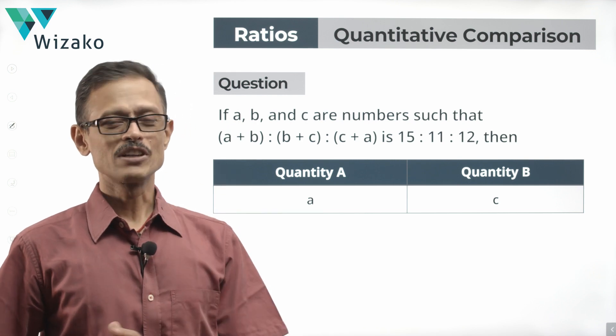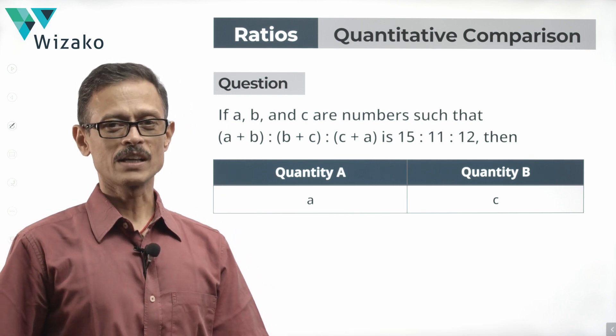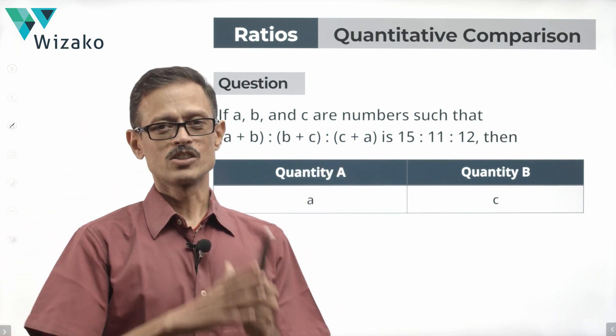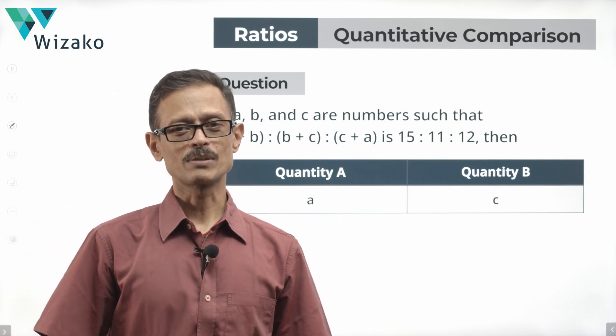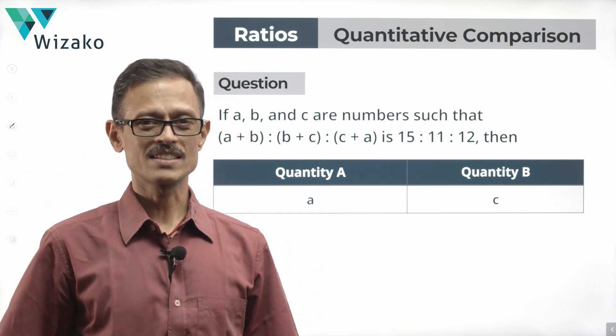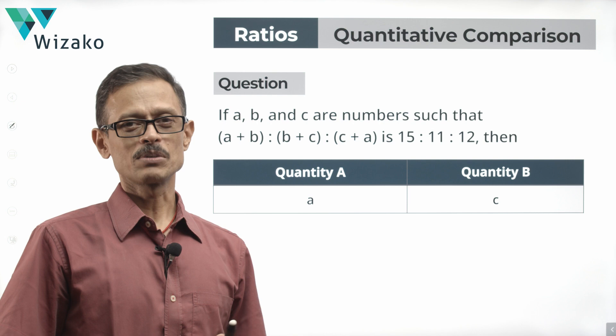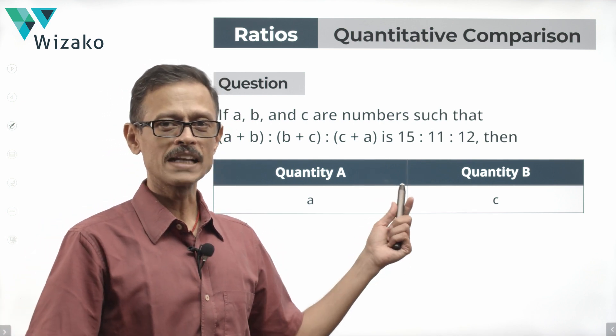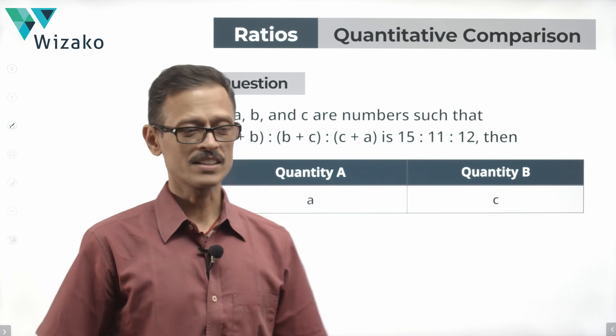Hello everyone. This is a beautiful, interesting GRE quantitative comparison question from the topic ratios. Appears to be a very simple question. Conceptually, yes, a very simple, straightforward question. Sorry, simple question, not necessarily a straightforward question. There's a beautifully laid out trap in this question. Unless you watch out for it, there's a good chance we might end up getting the answer incorrect. Let's get started with the question.